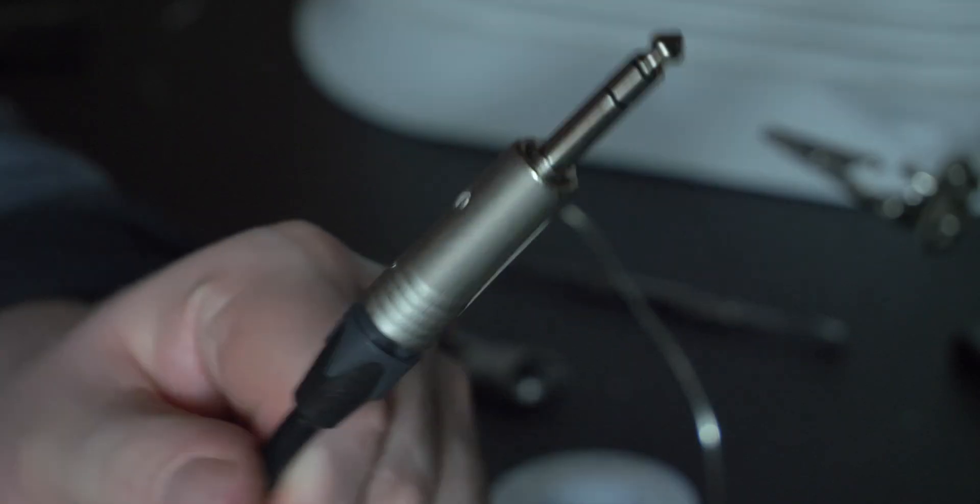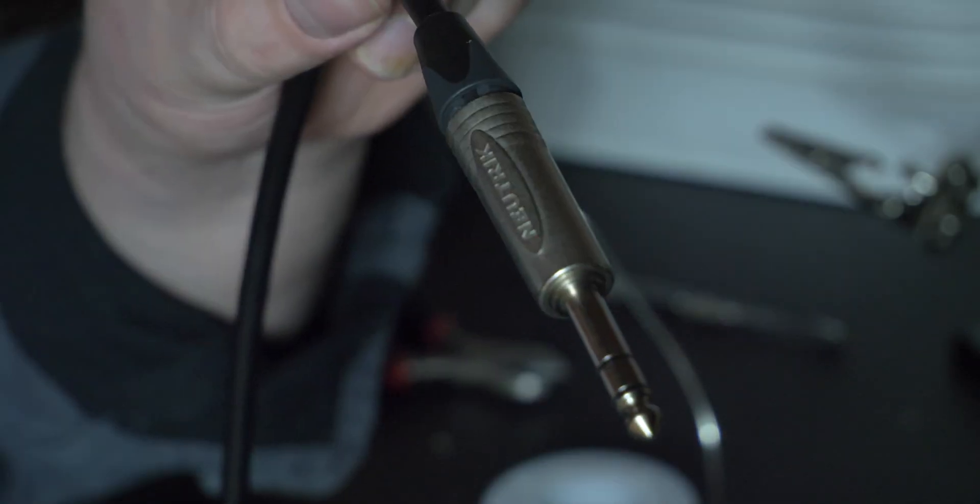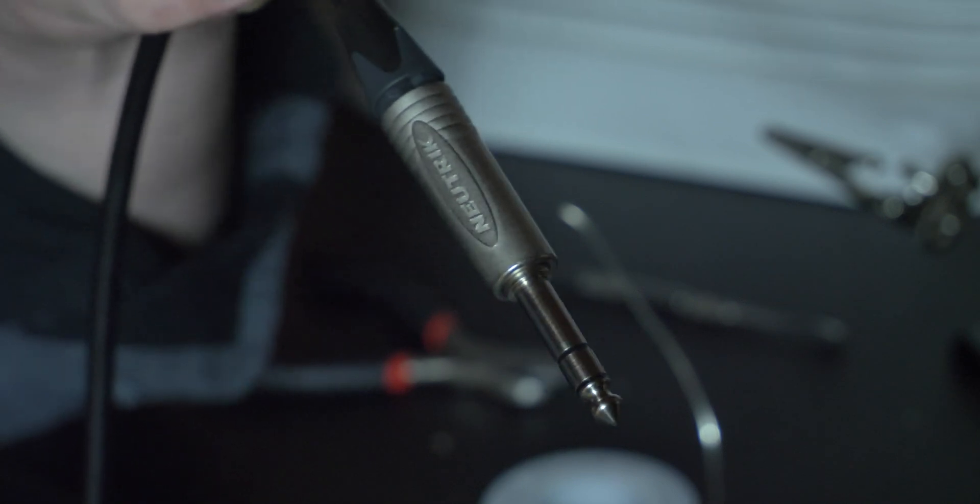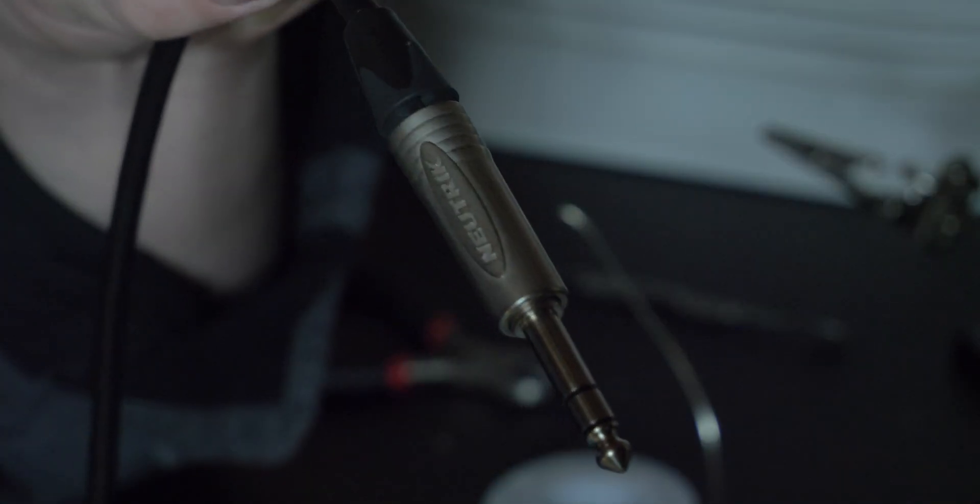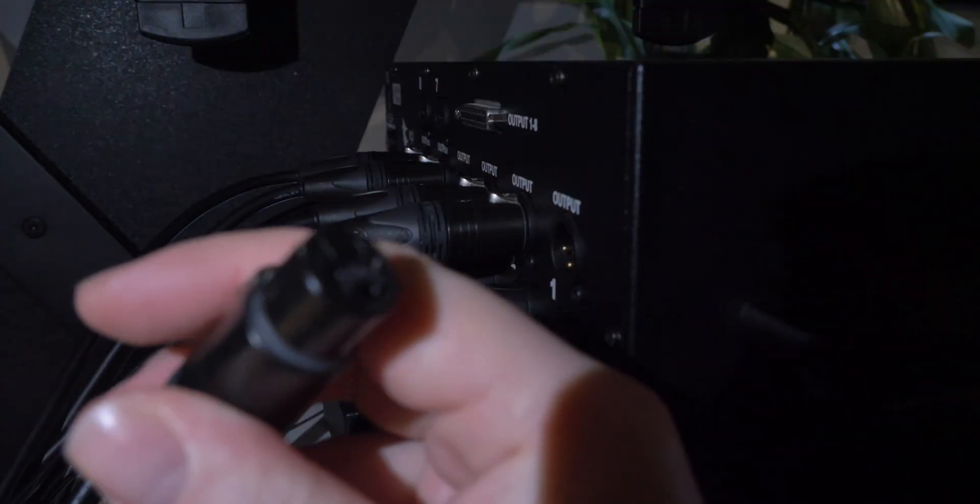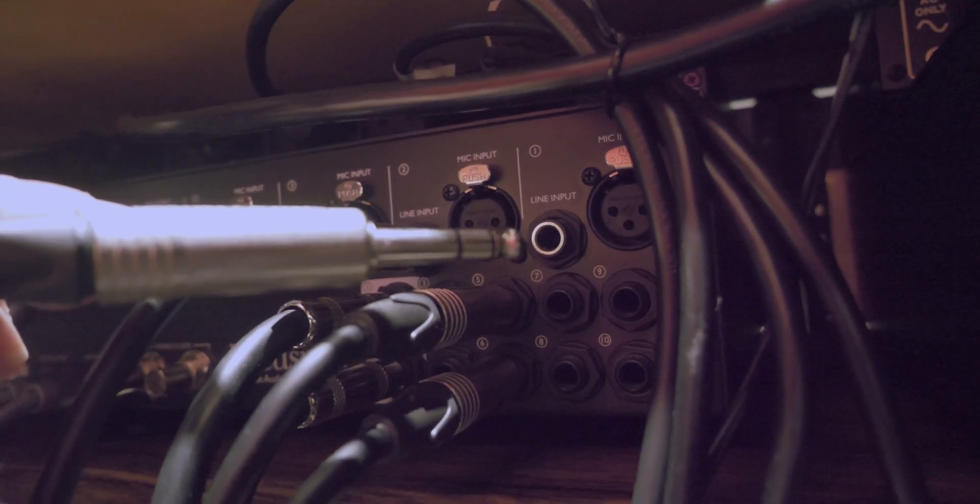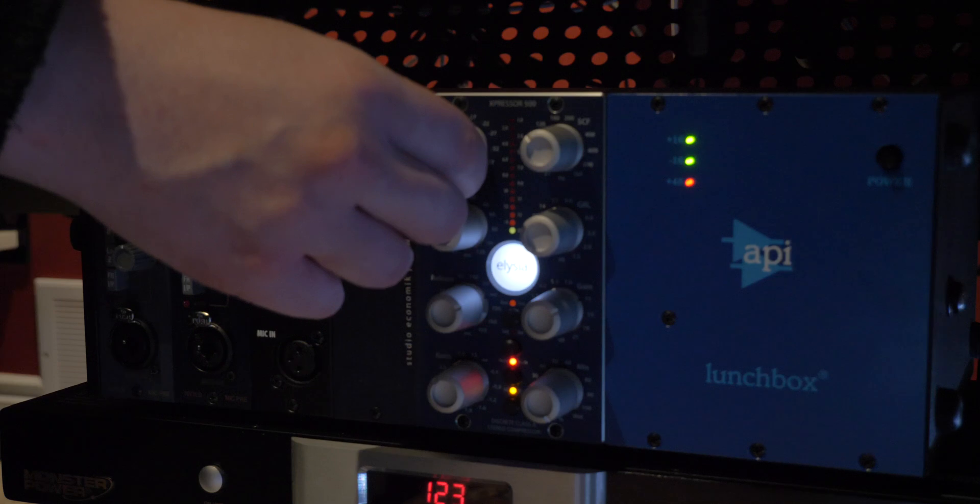I'm using these cables to go from the output of my lunchbox preamps to the line inputs of my interface. So the majority of these cables are female XLR on one side to come out of the lunchbox. And I'm using this male quarter inch plug on the other side to go into the line inputs.